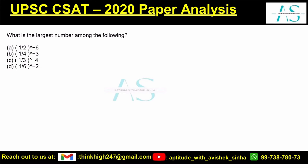What is the largest amongst the following? So that it is easier for us to evaluate: one by two to the power minus six, then we have next one as one by four to the power minus three, next we have one by three to the power minus four, then we have one by six to the power minus two.